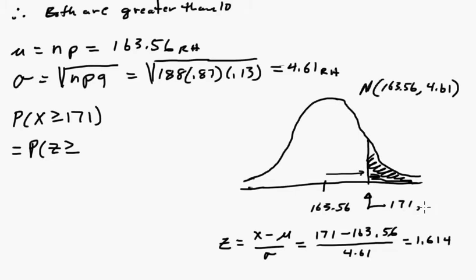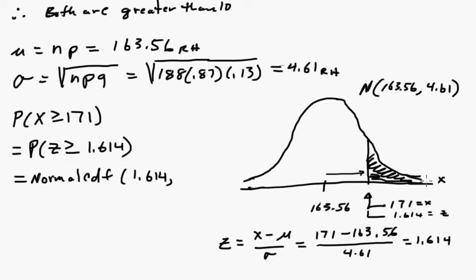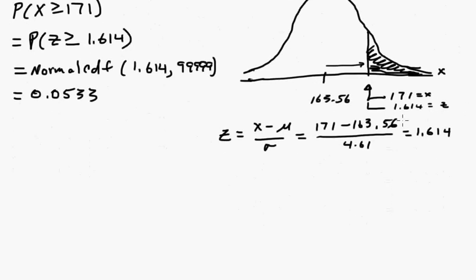This is x and for z it would be 1.614 for the z value, the corresponding z value. Now we can say normal cdf on the calculator and we give it 1.614, we're going to go out to positive infinity. So that gives us 0.0533.